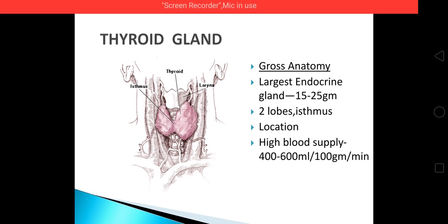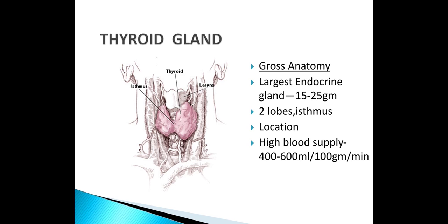The thyroid is the largest endocrine gland, located in front of the larynx, on either side and anterior to the trachea. It has two lobes connected by an isthmus. It weighs around 15 to 25 grams. It has the highest blood supply of around 400 to 600 ml per gram per minute — the rate of blood flow is very high, so it has a rich blood supply.